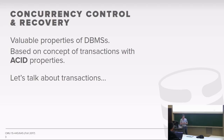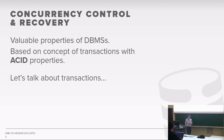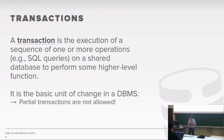Concurrency control and recovery mechanisms are one of the two key contributions you get from using a database management system to manage your data, versus just writing your own files to disk and hoping everything goes okay. The key concept that encompasses all of this — the key principle we need to understand to reason about whether our database system is running correctly — is this notion of a transaction.